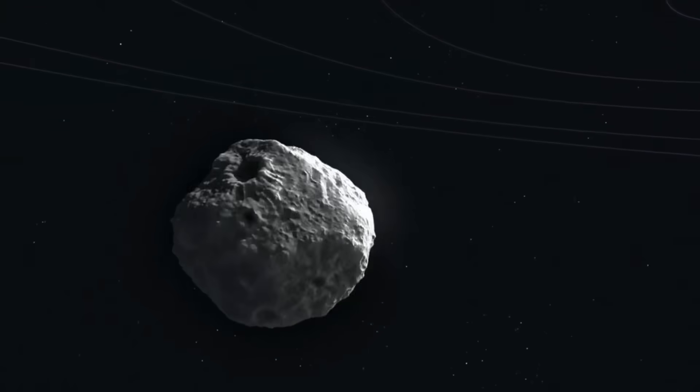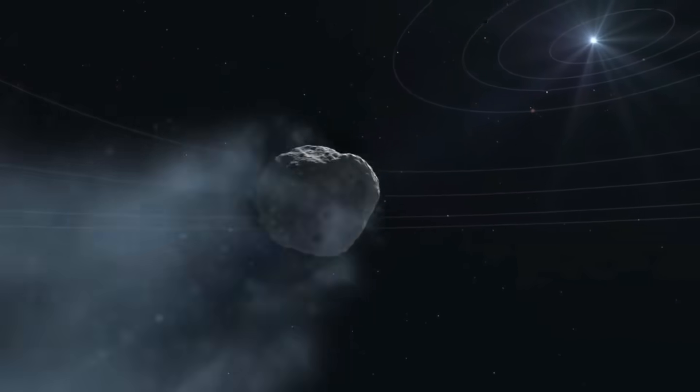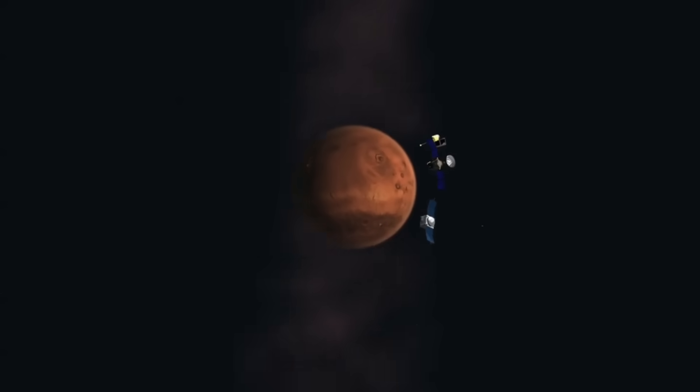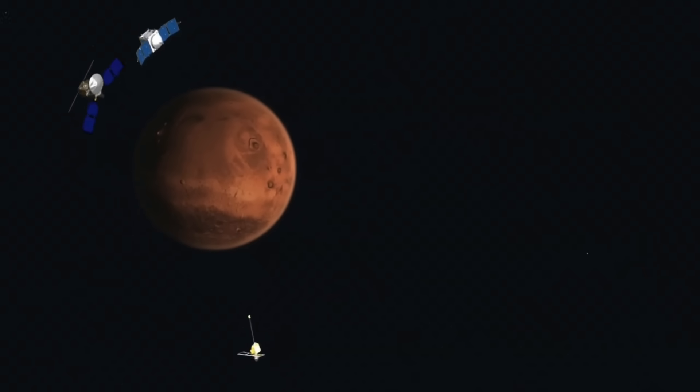Think about that: an object traveling for billions of years through interstellar space, arriving at precisely the optimal orbital insertion point. And that's just the first anomaly.